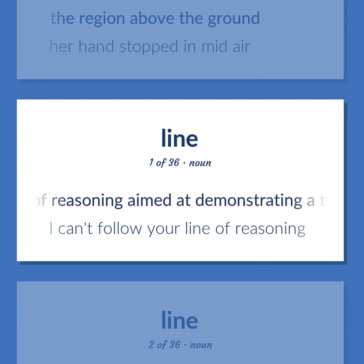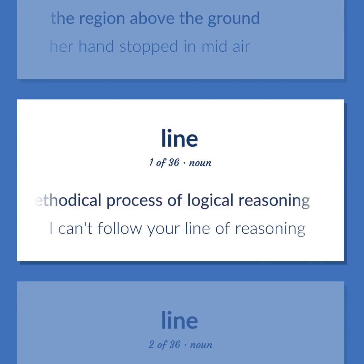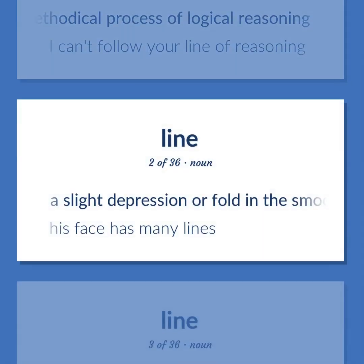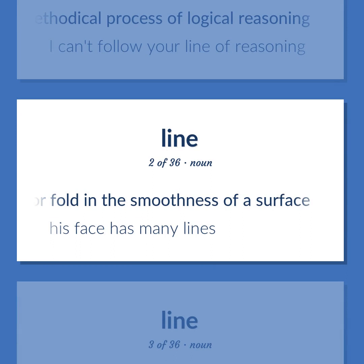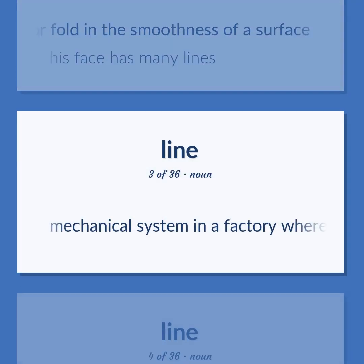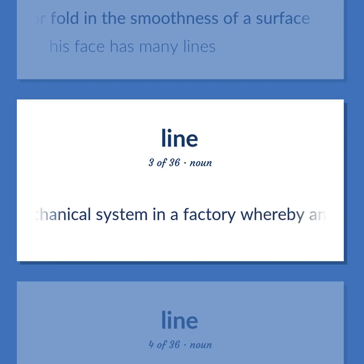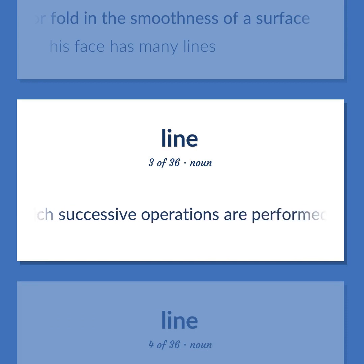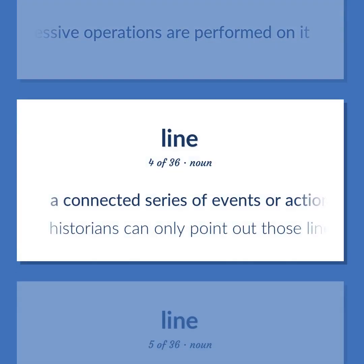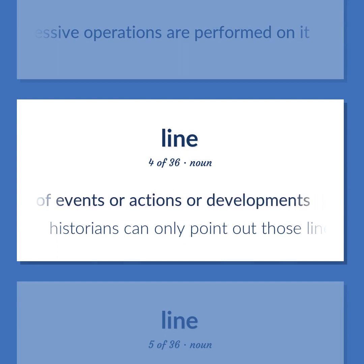Line. A course of reasoning aimed at demonstrating a truth or falsehood; the methodical process of logical reasoning. I can't follow your line of reasoning. A slight depression or fold in the smoothness of a surface. His face has many lines. Mechanical system in a factory whereby an article is conveyed through sites at which successive operations are performed on it. A connected series of events or actions or developments. Historians can only point out those lines for which evidence is available.